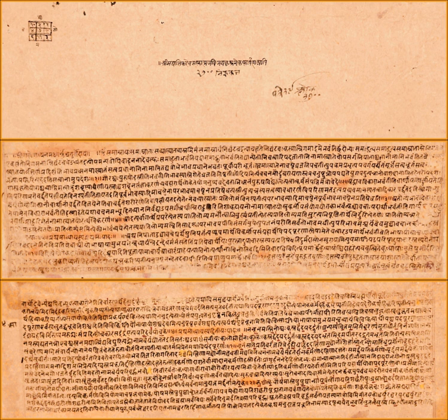The three commentaries on Yaska's Nirukta text are by Hindu scholars named Durgasimha, also known as Durga, who likely lived before the 6th century CE; Skanda Mahasvara, who may be two scholars who probably lived before the 5th century CE; and Nilakantha, who probably is from the 14th century.